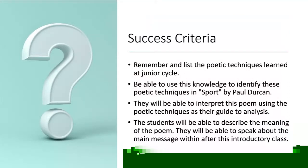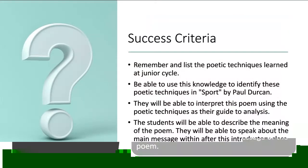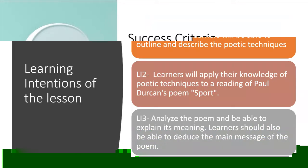The success criteria agreed with the students will determine if the lesson has achieved its learning intentions. The student will be able to remember and list poetic techniques learned at junior cycle. They will be able to apply them in the context of analysing Sport by Durkan and identify the techniques in the poem. They will also be able to describe the basic meaning of the poem.